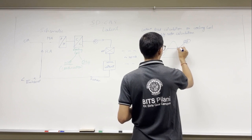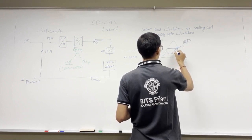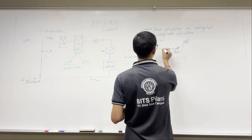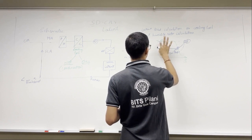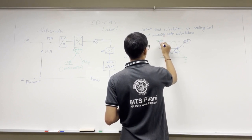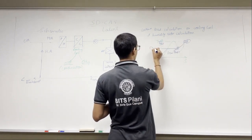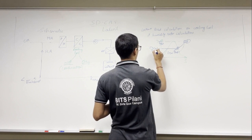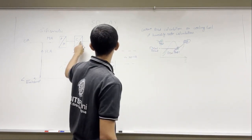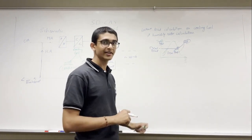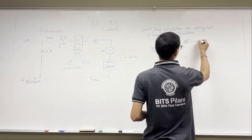This is the dew point temperature, and that's the dew point temperature. This is the given temperature — the dry bulb temperature. The dry bulb temperature of the air is here, and this is the dew point temperature.